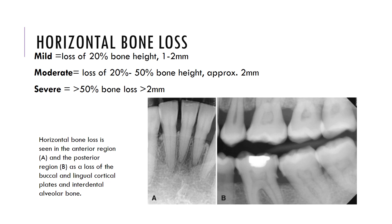Horizontal bone loss is further divided as mild when there is loss of about 20% of bone height or 1 to 2mm bone height using CEJ as a reference point, moderate when the loss is 20 to 50% bone height approximately, and severe when it is greater than 50% bone loss or greater than 2mm bone loss.